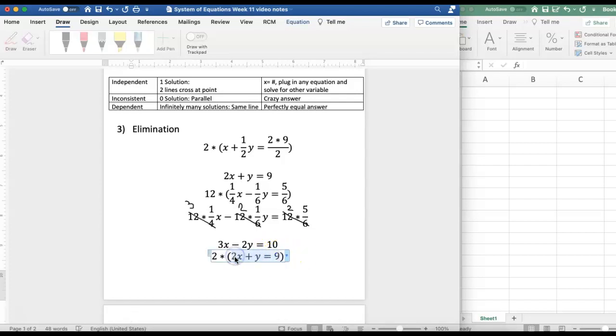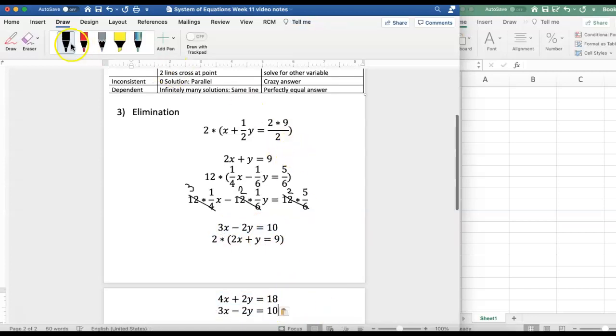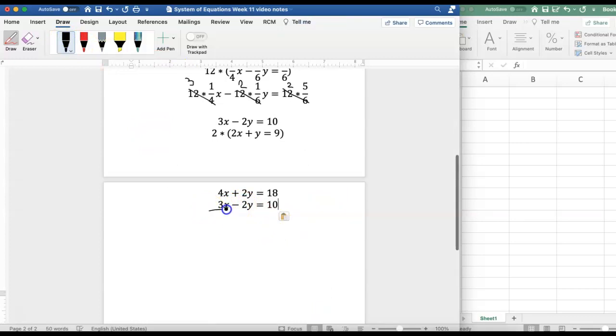I'm gonna copy this and then 2 times 2 gives me 4x so I'll change this to 4, 2 times there's a 1 here in front of the y so it just becomes 2 times 1 which is 2 and then 2 times 9 gives me 18. I'm gonna bring this equation down one more time so that we can just see as we add those together.